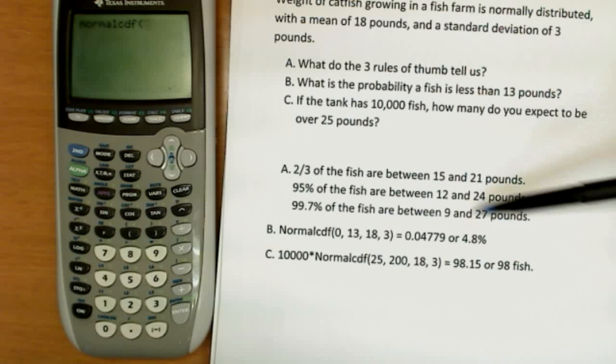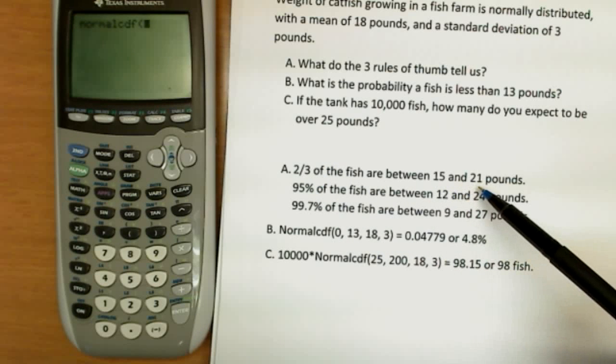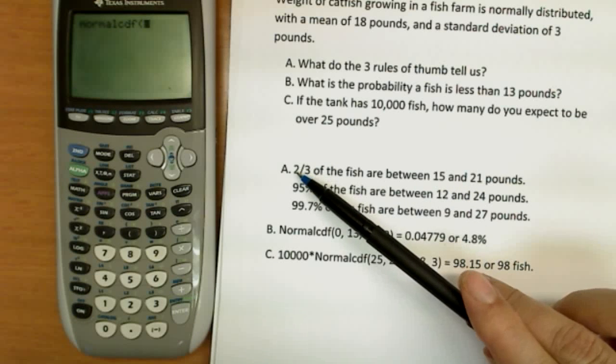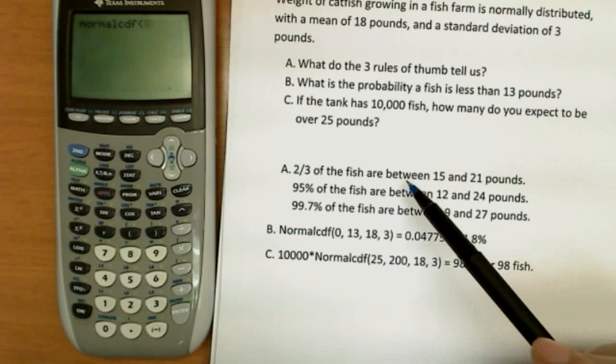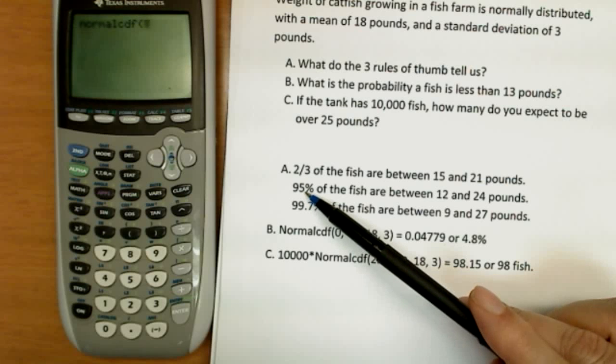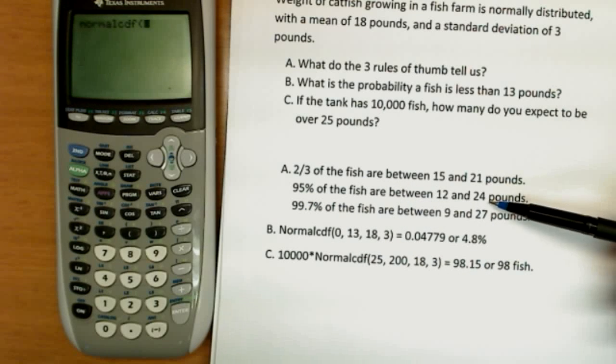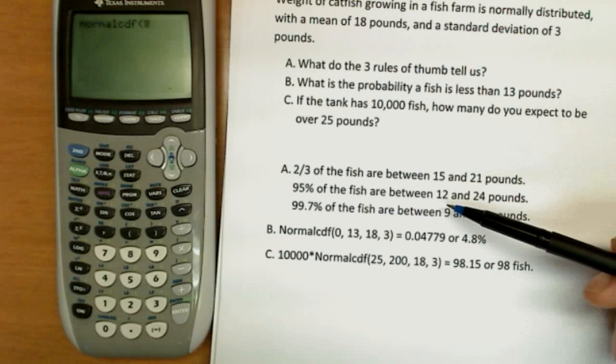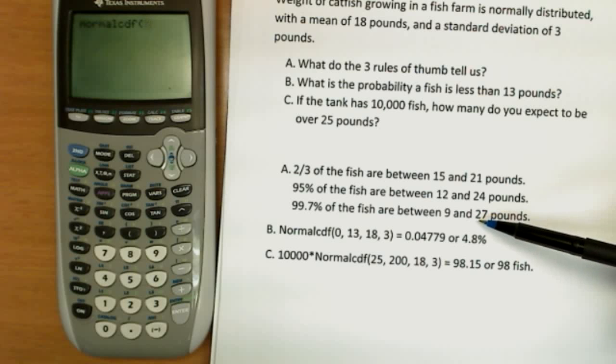So really we expect very few fish to be outside of these ranges. In fact, since two thirds are between 15 and 21, the missing part here is one third. And half of that or one sixth of the fish would be greater than 21. One sixth would be less than 15. Here we're missing 5%. Half of that is two and a half percent. And we expect half on either side. So two and a half percent of the fish would be greater than 24 pounds. And two and a half would be less than 12 and so on. Very, very small amount would be outside of it here, obviously.